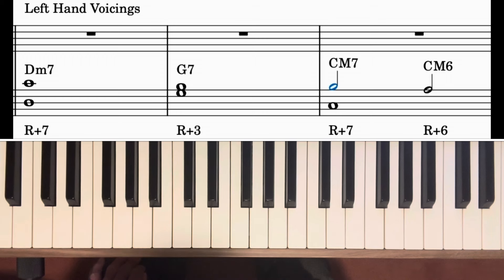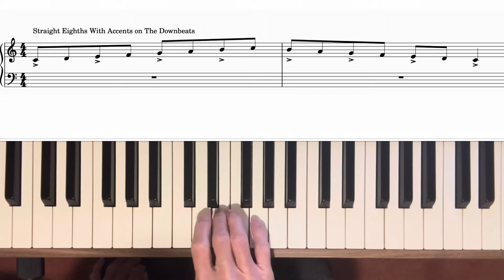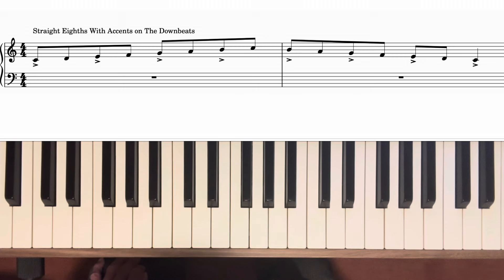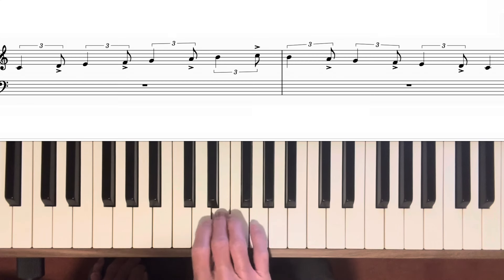In jazz we usually play eighth notes in what we call swing feel. Normally, if we divide quarter note beats into eighth notes, the eighth notes are of equal length — so a C major scale in eighth notes sounds like: one and two and three and four and. In swing feel, we play the eighth notes with a triplet feel, with the first of each pair of eighth notes lasting twice as long as the second — one and a two and a three and a four and a.